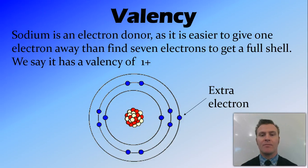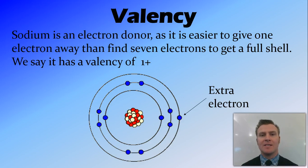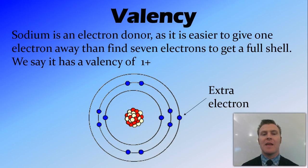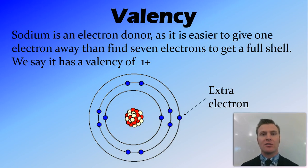Sodium has one valence electron in its outer shell. For sodium, it's easier to give that one electron away than to receive seven electrons to get a full outer shell. Therefore, sodium is an electron donor, and it'll give away its electron. We say that it has a valency of plus one, or 1+, meaning it has one fewer electron than protons.